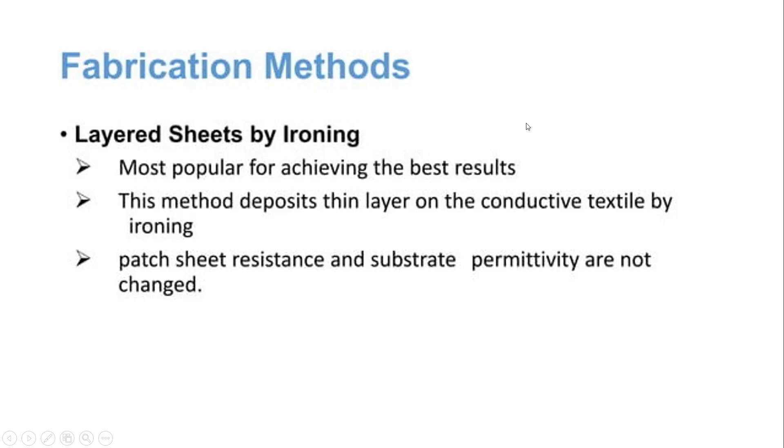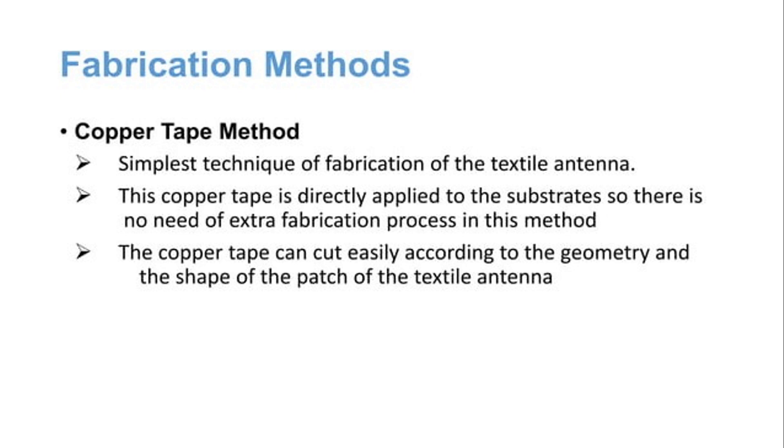Fabrication can be done in two methods. The first method is layered sheets by ironing. It is the most popular for achieving the best stages. This method deposits thin layer on the conductive textile by ironing. Patch sheet resistance and substrate permeability are not changed. The second method is copper tape method, the simplest technique of fabrication of a textile antenna. This copper tape is directly applied to the substrate so there is no need of extra fabrication process in this method. The copper tape can cut easily according to the geometry and the shape of the patch of the textile antenna. We have used the second method which is copper tape method to implement the project.